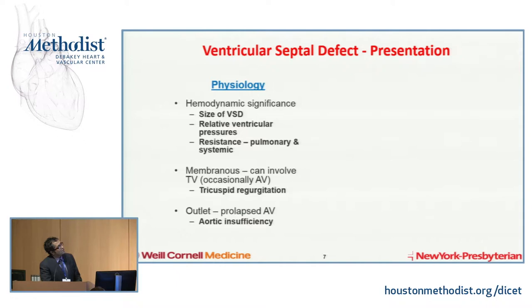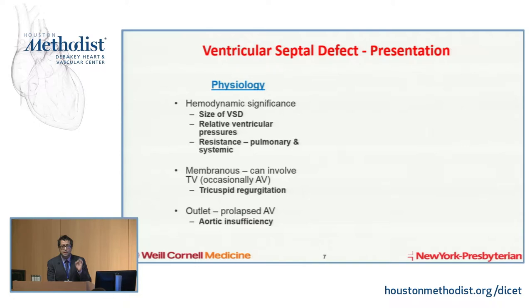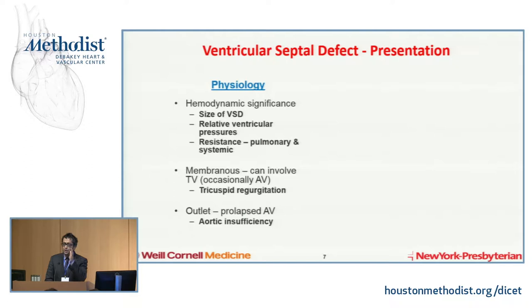The physiology is as important as the anatomy. What dictates what happens with a VSD is based on the size of the ventricular septal defect and, secondarily, the relative resistance of the pulmonary and systemic vasculature — those are the two main physiologic principles. Membranous defects, because they're close to the tricuspid valve, can involve tricuspid valve leaflet tissue that helps close them, but they can lead to secondary tricuspid regurgitation. Outlet defects can involve the aortic valve prolapsing into the defect, which can lead to aortic insufficiency — a bigger problem.